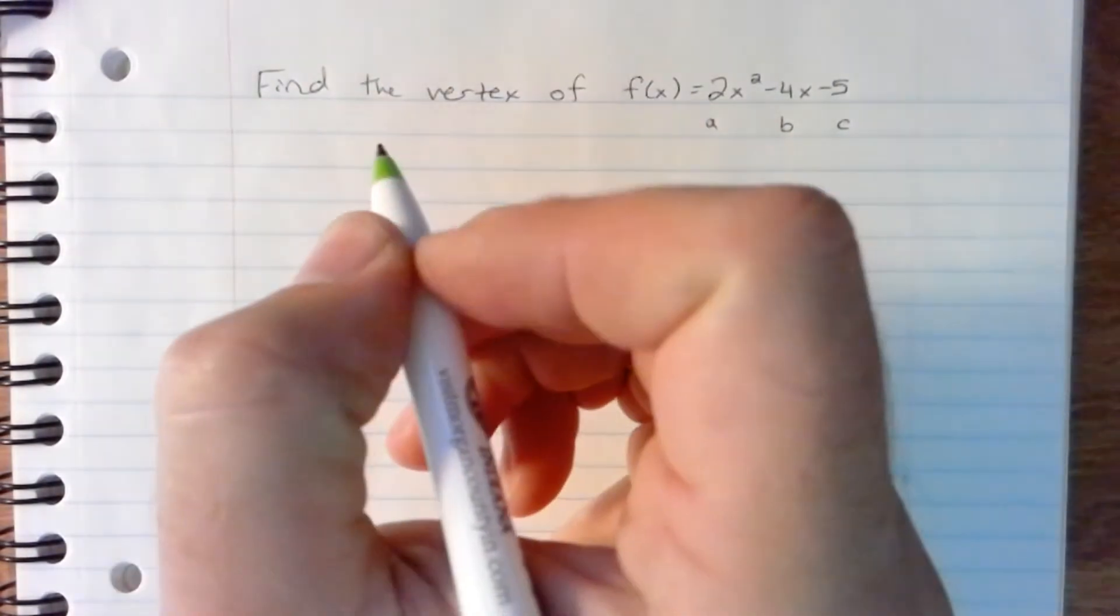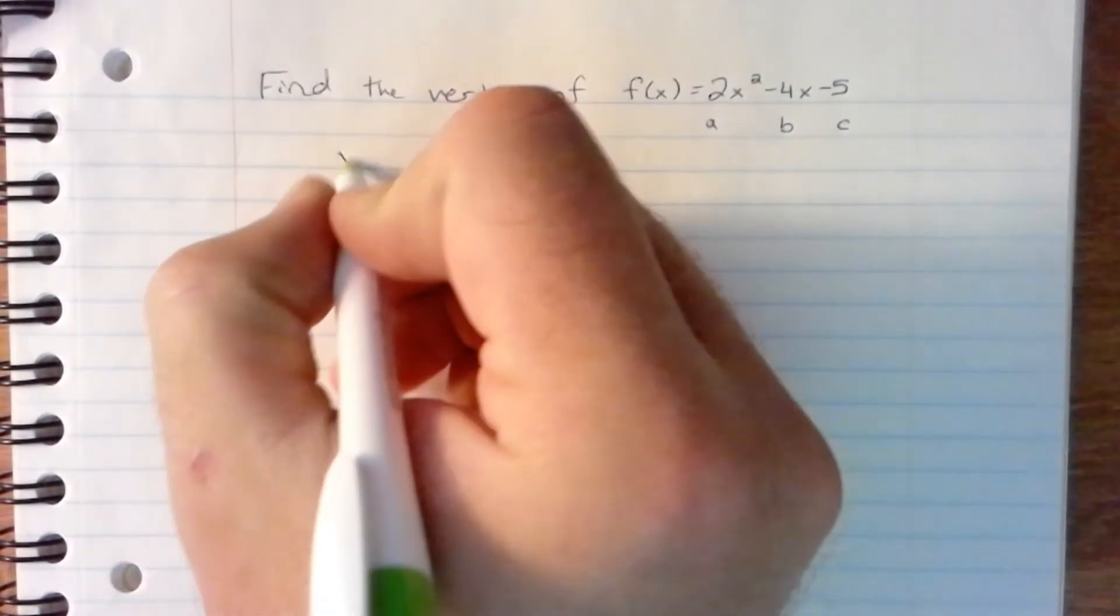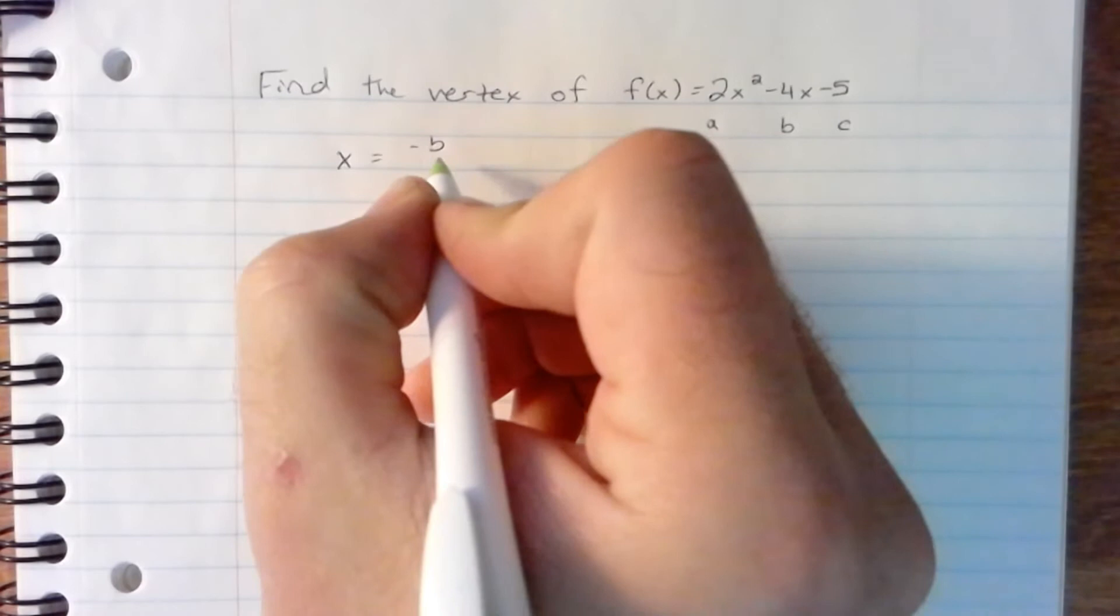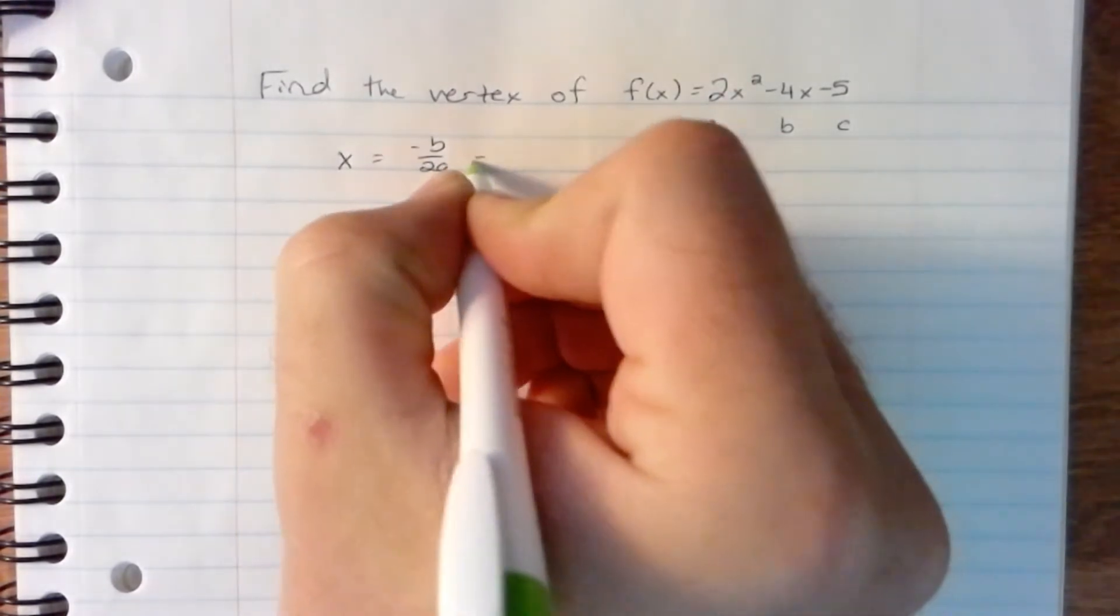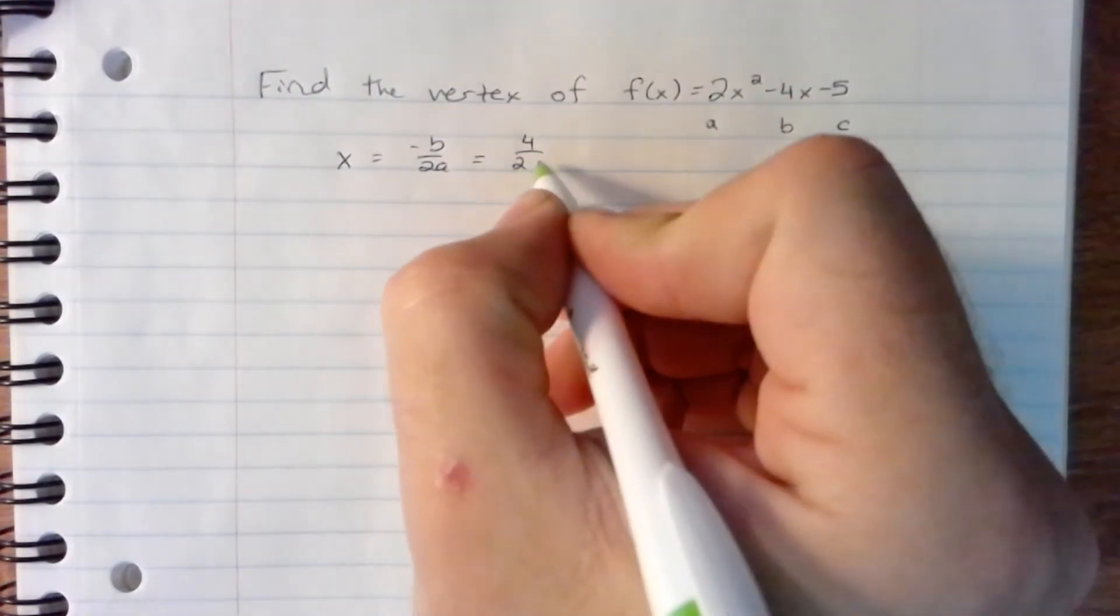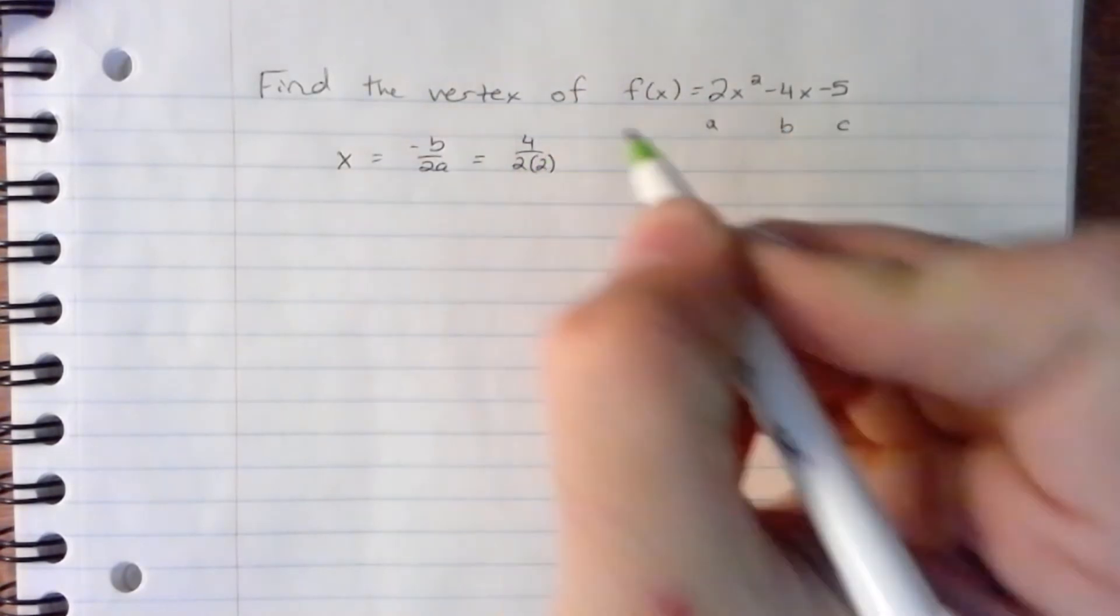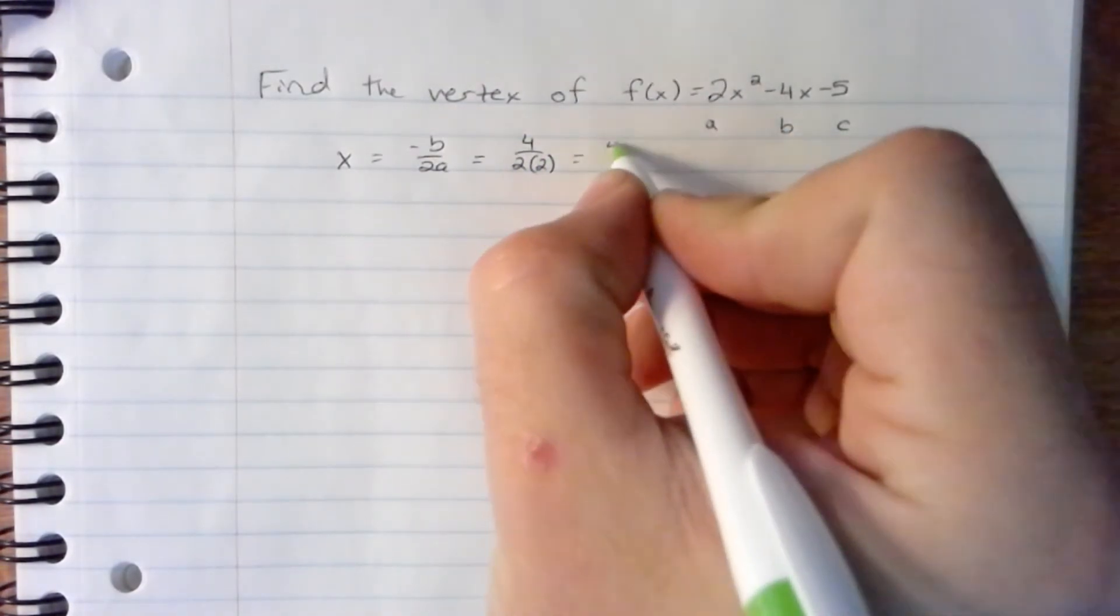We use the formula negative b over 2a. So in this case, negative 4 over 2 times 2. 2 times 2 is 4. We have 4 over 4, which equals 1. So the x-coordinate is 1.